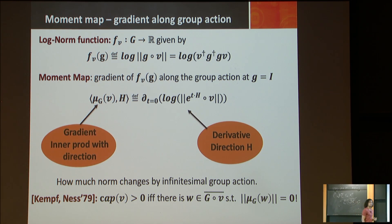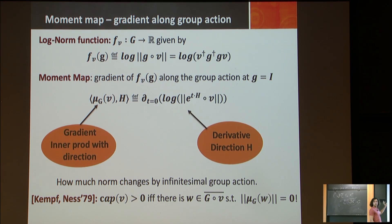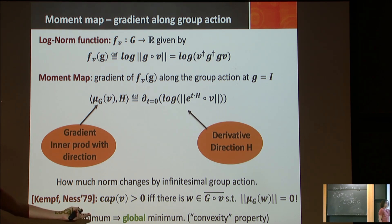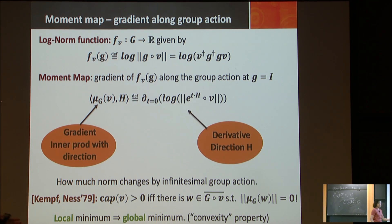What Kempf-Ness proved in 1979 is that the capacity is bigger than zero if and only if there is an element w in the orbit closure such that the moment map evaluated at w has norm zero — meaning the gradient of the function at w equals zero. In optimization terms: a local minimum is a global minimum, which is a characteristic of convex functions. This is the Kempf-Ness theorem. You can see it as a duality statement: if your capacity is zero, you can pull elements and get close to zero; if not, there is a point with gradient zero that certifies the capacity is positive.